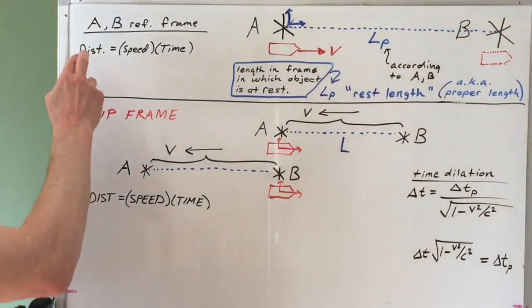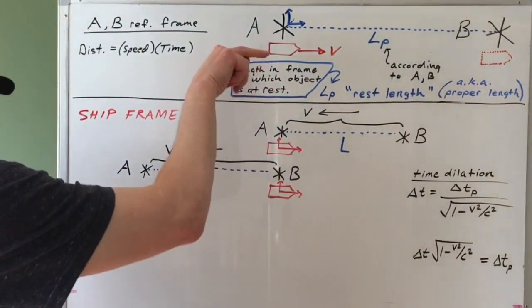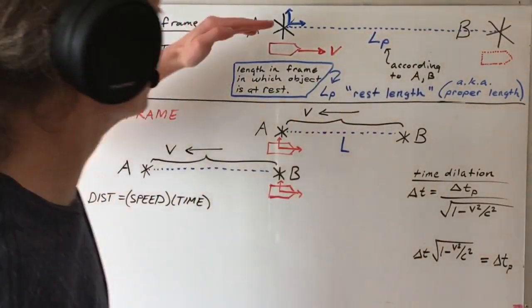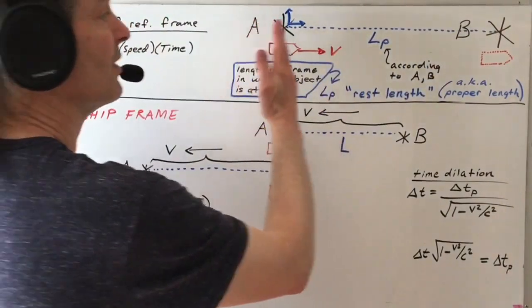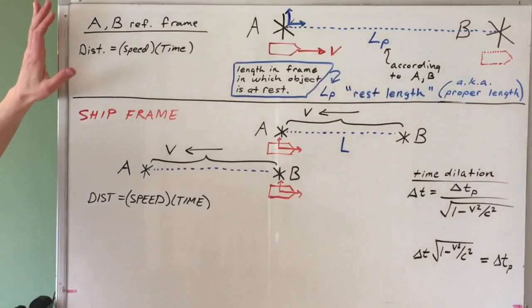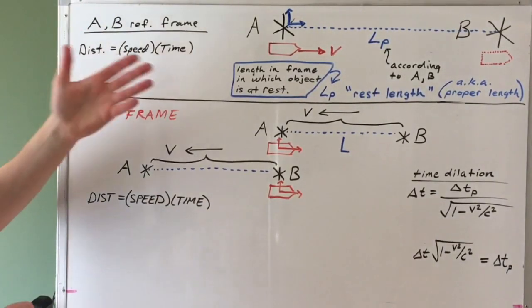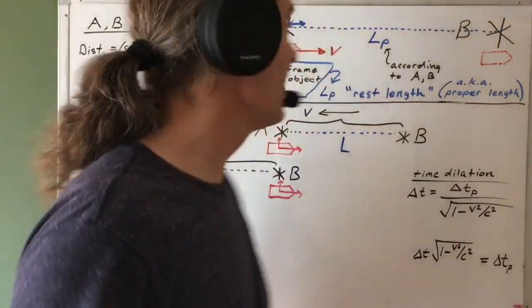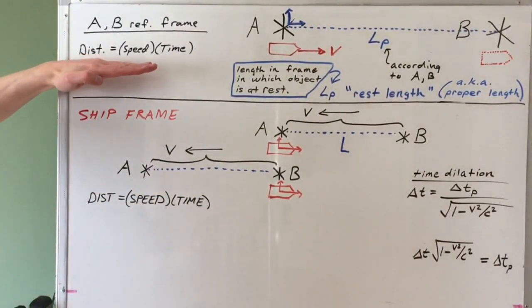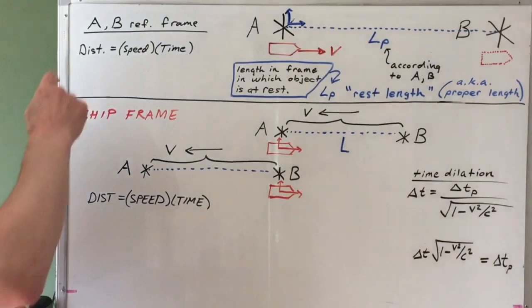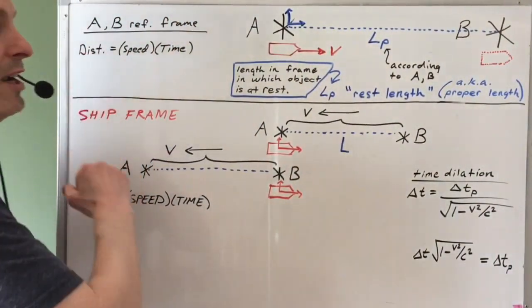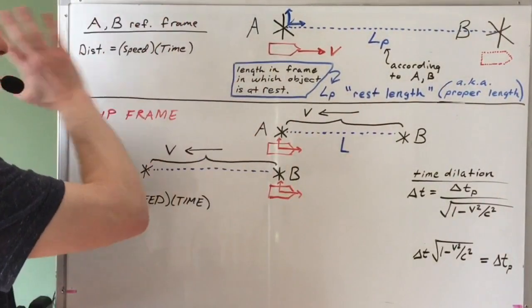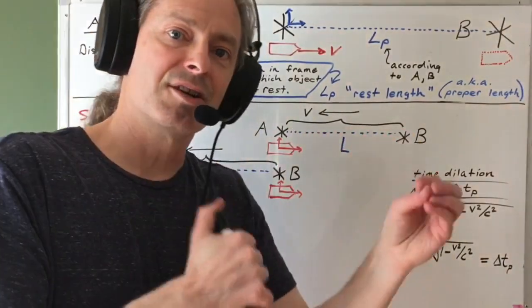I want to use the relationship distance equals speed times time to relate this length to the speed that the spaceship is moving between star A and star B. We're going to assume the spaceship is moving from star A to star B at some constant speed V. We have to be very careful with this relationship — it's true for things moving at constant speed, and is a mathematical consequence of kinematics. The distance, the speed, and the time all need to be measured in the same reference frame. I can't mix distances in one reference frame with times in another.